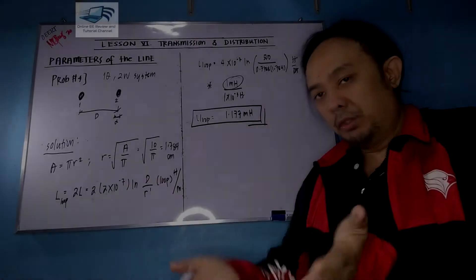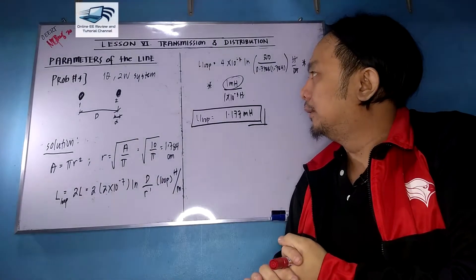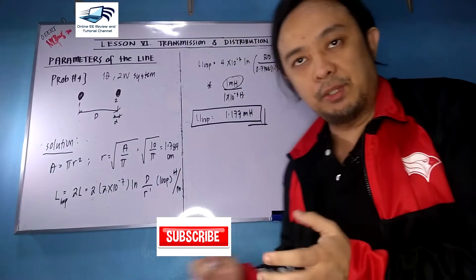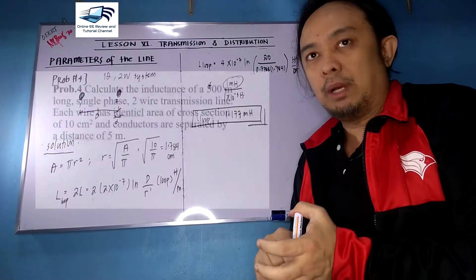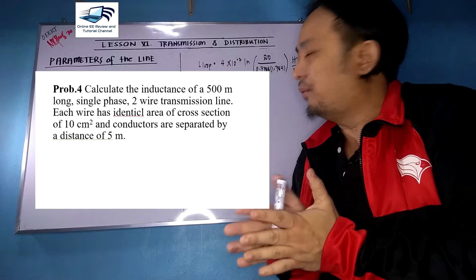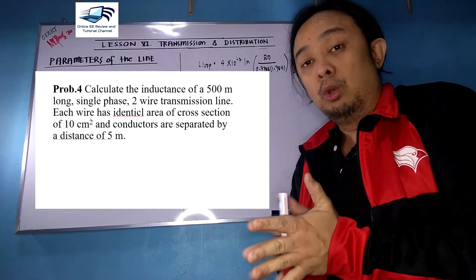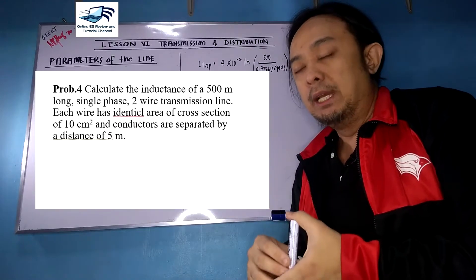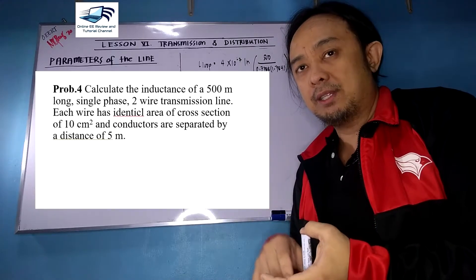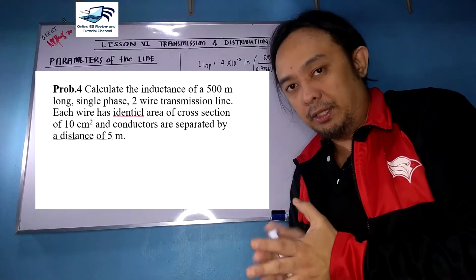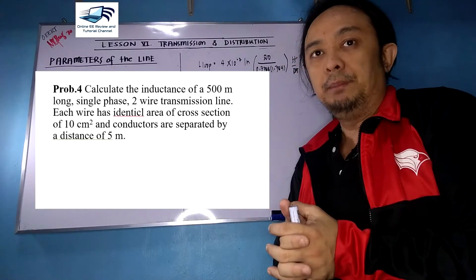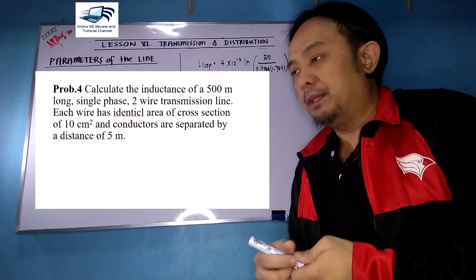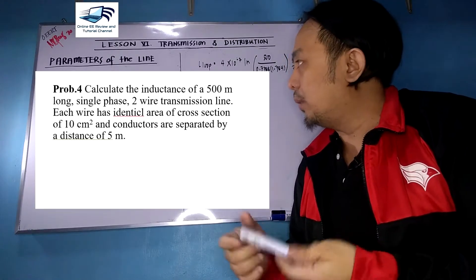We will continue our discussion on parameters of the line. We are in problem number four. You need to calculate the inductance of a 500-meter long single-phase two-wire transmission line, where each wire has an identical cross-sectional area of 10 centimeters squared, and the conductors are separated by a distance of five meters.